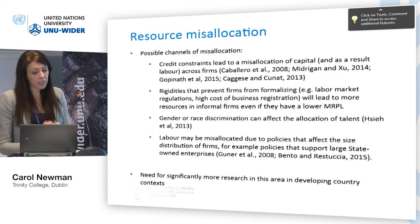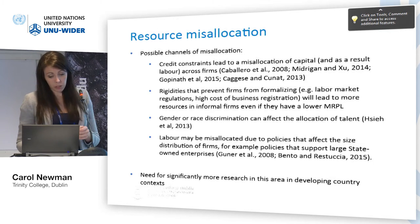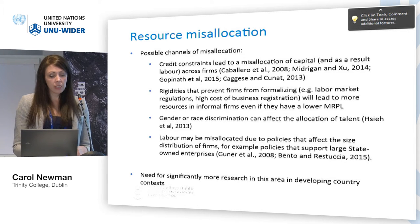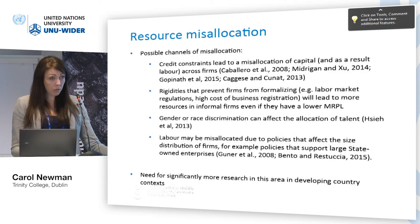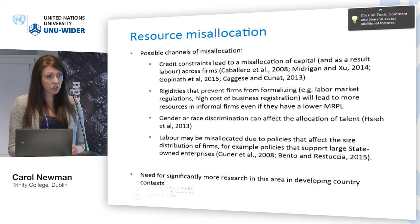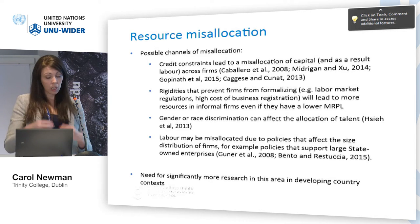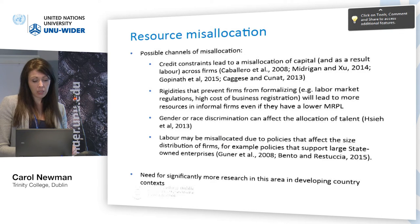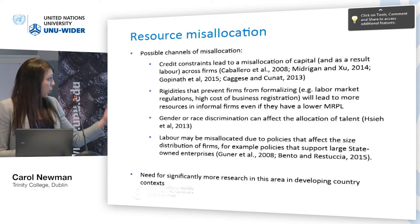Possible channels of misallocation found in the literature relate to things like credit constraints, which lead to a misallocation of capital across firms — this has been one of the main sources investigated to date. You can also think about rigidities that prevent firms from formalizing: if it's costly to formalize, firms will remain informal, meaning more resources may be allocated to informal firms even if they have a lower marginal revenue product of labor. Similarly, gender or race discrimination can affect the allocation of talent — an interesting paper by Hsieh and others looked at the removal of gender and race discrimination in the US and found significant productivity gains. Labor can also be misallocated due to policies that affect the size distribution of firms, such as supporting large state-owned enterprises.